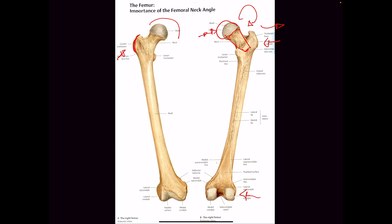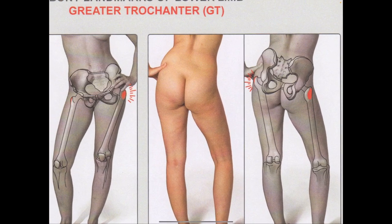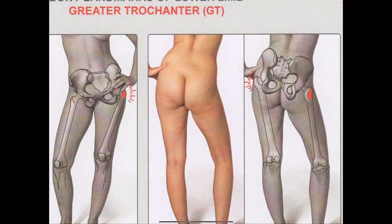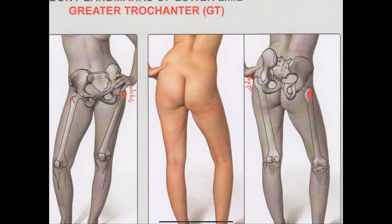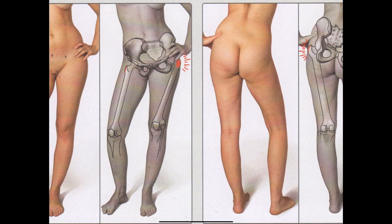Why am I pointing this out? Think about your deltoid — can you lift your arm up? What happens to that acromion when I lift my arm up? It indents. If I put my arm down, it sticks out. So if we think about the femur, it's the exact same thing. If I lift my leg and push it up, you're going to see it extend out.